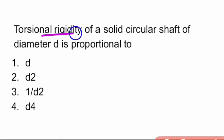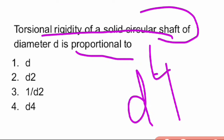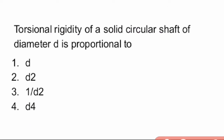Next question: the torsional rigidity of a solid circular shaft of diameter d is proportional to what? The options given are d, d², 1/d², and d⁴. The torsional rigidity of a solid circular shaft of diameter d is proportional to d⁴.